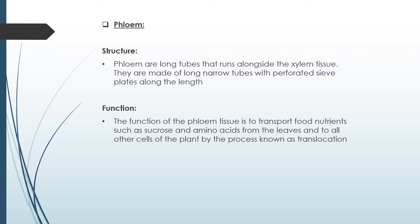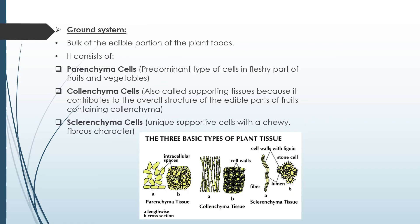Phloem transports nutrients such as sugars and amino acids from the leaves to all other cells of the plant by a process known as translocation. Phloem consists of long tubes that run alongside the xylem tissue. They are made of long narrow tubes with perforated sieve plates along the length, and they help in the transportation of food and nutrients.